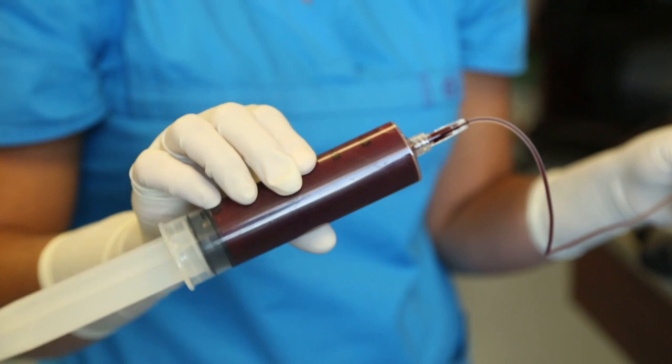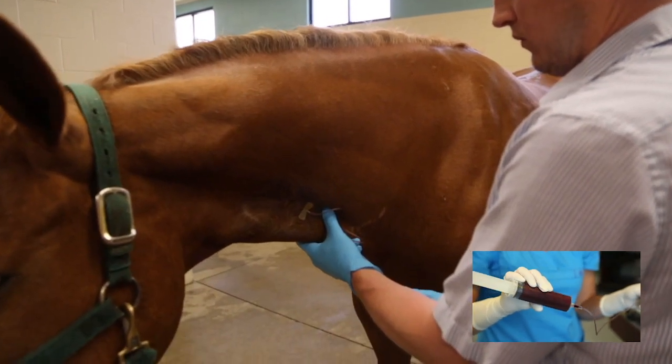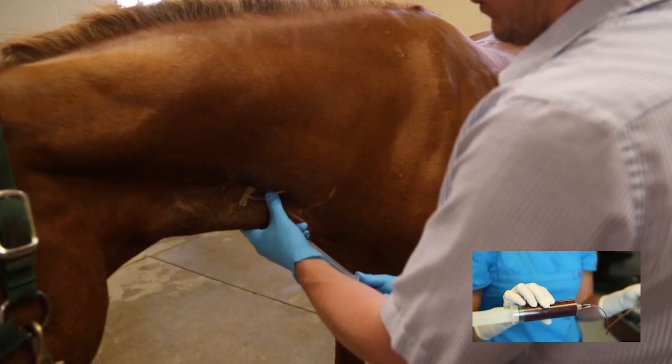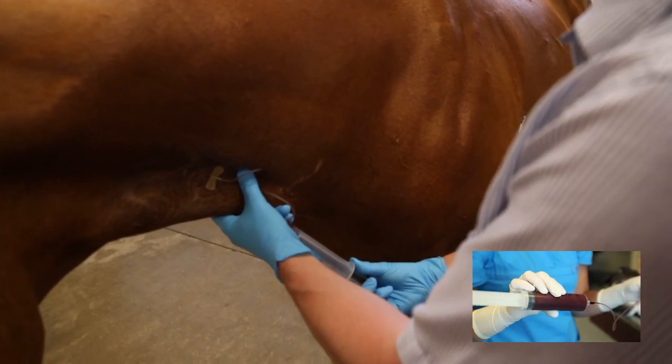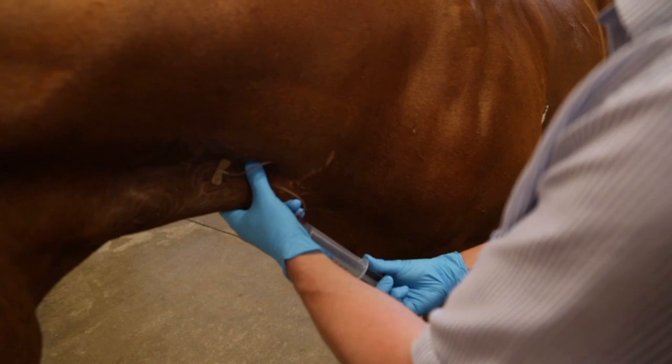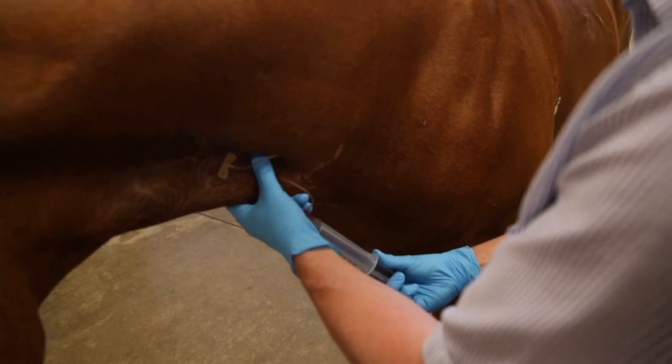An 18 or 19 gauge apheresis needle set is recommended to minimize the risk of damage to the platelets and cells and will make it easier to invert the syringe during the blood draw. Take note of the total volume in the syringe in consideration of the appropriate counterbalance weight during centrifugation.